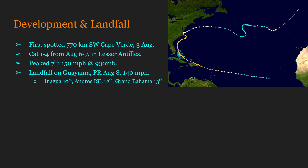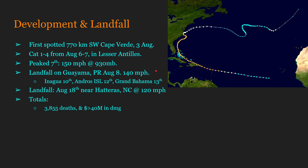Other landfalls include Inagua Island on the 10th, Andros Island on the 12th, and Grand Bahama on the 13th. The hurricane's last landfall would be from an interesting turn back towards the U.S. coast after paralleling it for some time, making landfall near Hatteras, North Carolina, on August 18th at wind speeds of a surprisingly healthy 120 miles per hour.